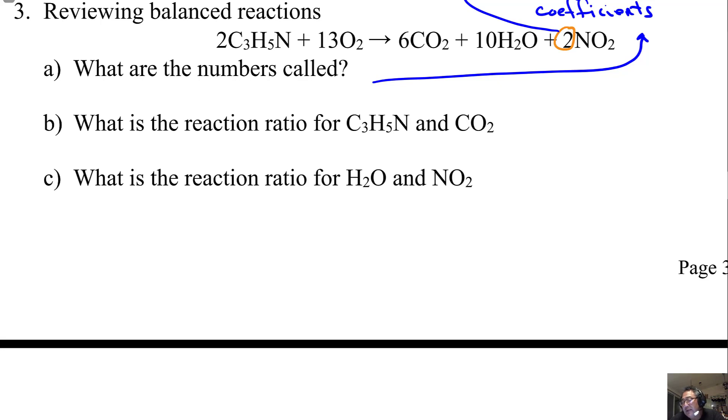And then we have what are called reaction ratios. These are like mole ratios that we get from chemical formulas. But if you look at the reaction ratio for this compound to this one, I know the reaction ratio is 2 moles of C₃H₅N equals 6 moles of CO₂. What that statement means is that for every 2 moles of the first compound, I can produce 6 moles of carbon dioxide.